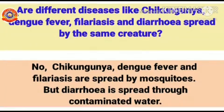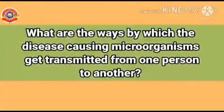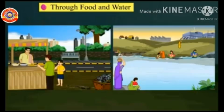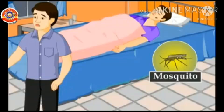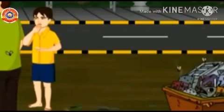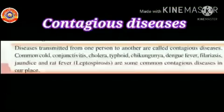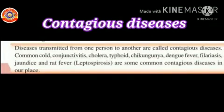What are the ways by which disease-causing microorganisms get transmitted from one person to another? Through air; through food and water; through creatures; through waste materials; and through the use of unsterilized needles, etc.